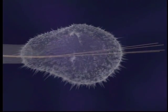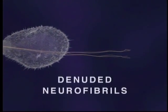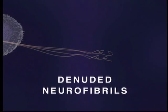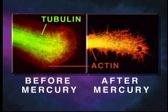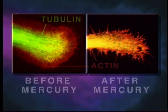Consequently, the neurite's microtubules begin to disassemble into free tubulin molecules, leaving the neurite stripped of its supporting structure. Ultimately, both the developing neurite and its growth cone collapse, and some denuded neurofibrils form aggregates or tangles as depicted here. Shown here is a neurite growth cone stained specifically for tubulin and actin, before and after mercury exposure. Note that the mercury has caused disintegration of the tubulin microtubule structure.